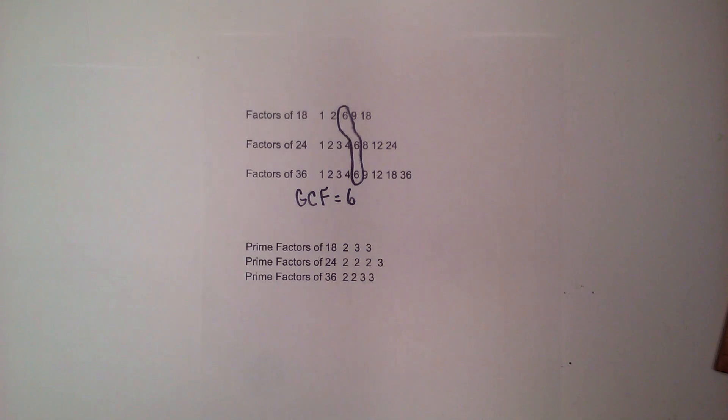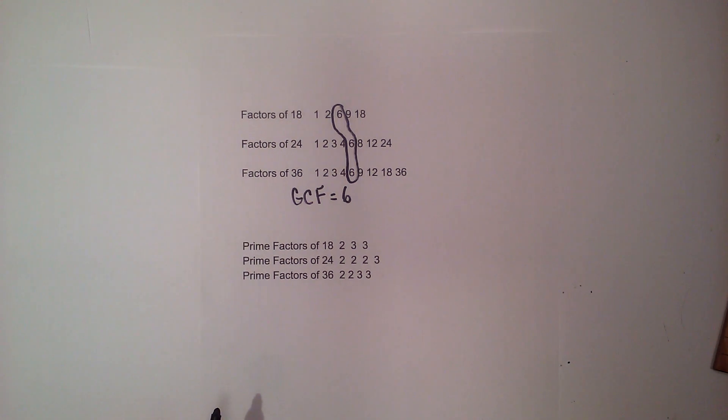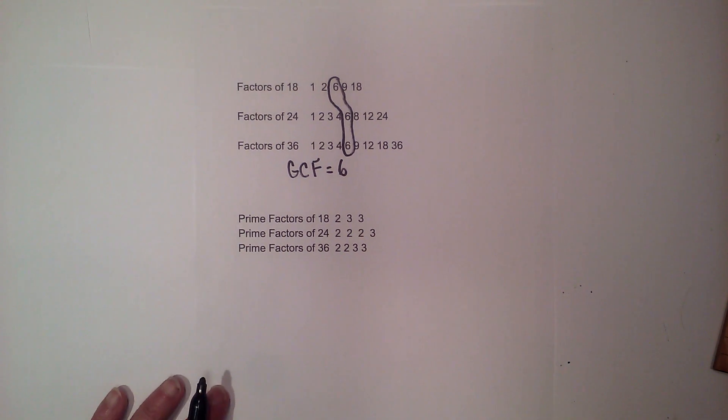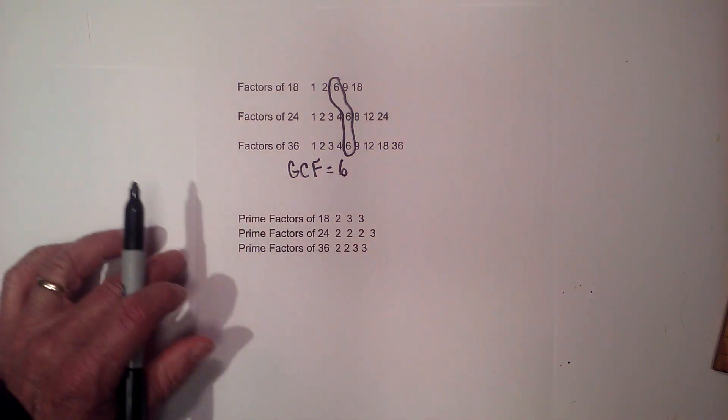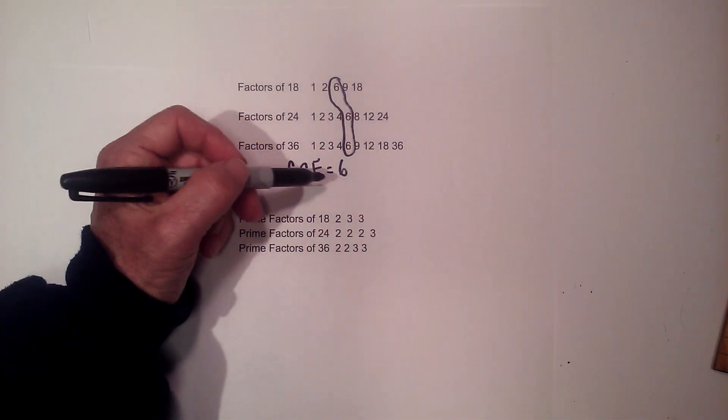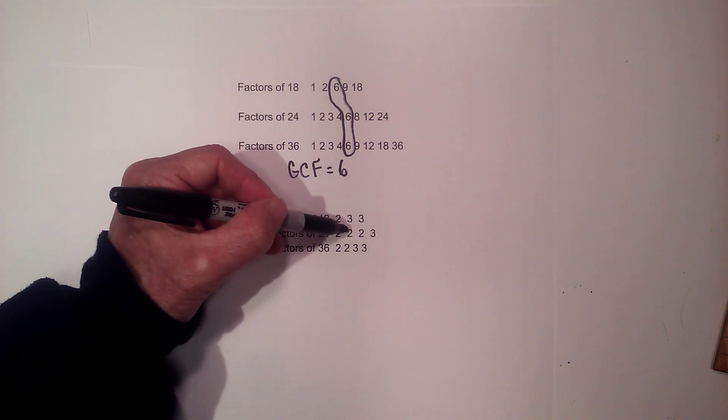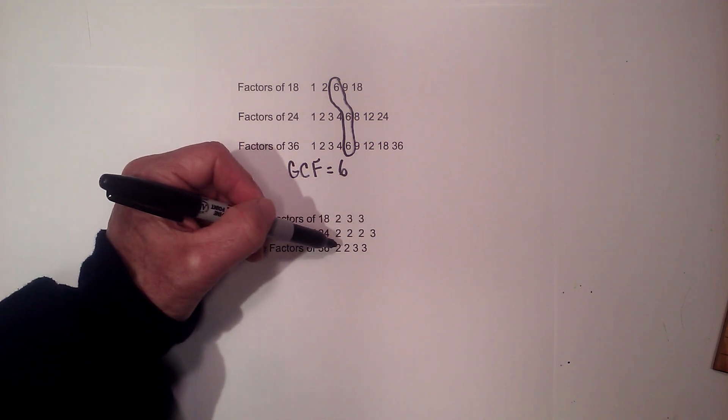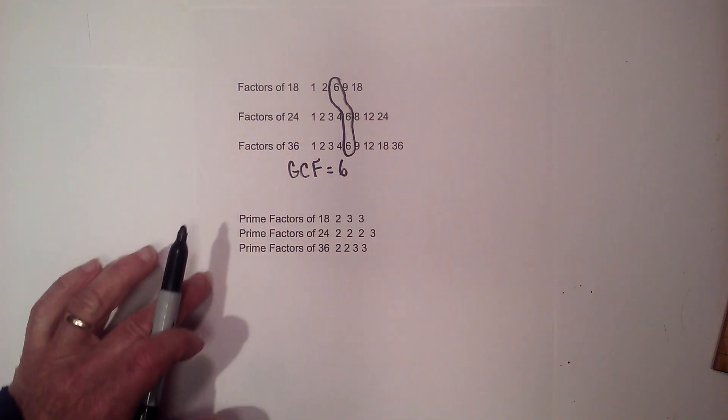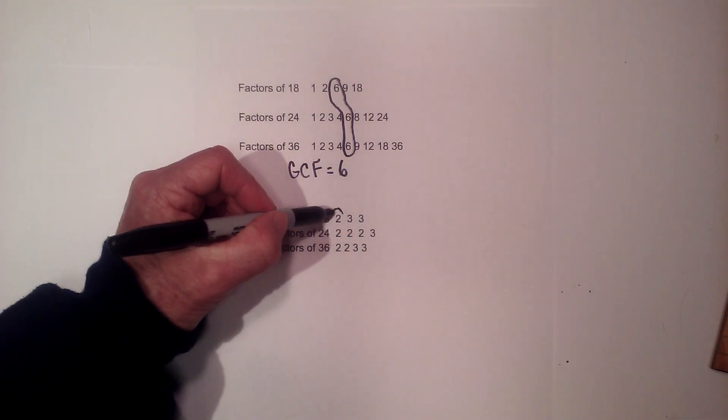Now if we were to use the prime numbers, and you can create a factor tree for each of these numbers I'm not going to, but the prime factors for 18 are 2, 3, and 3. For 24 they're 2, 2, 2, and 3. And for 36 they're 2, 2, 3, 3.